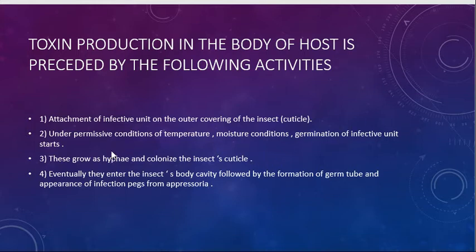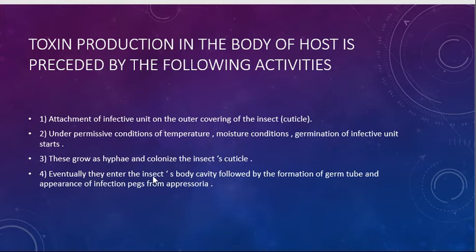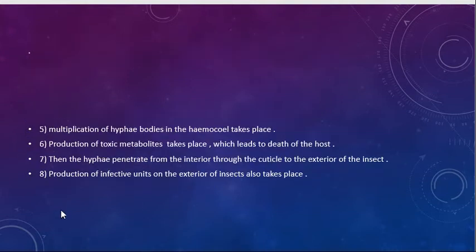They grow as hyphae and colonize the insect's body. The insect's body is colonized by the formation of a germ tube. After entering the body, they produce a germ tube. And as a result, the appearance of certain infectious propagules from appressoria is seen. Then the multiplication of hyphal bodies in the hemocoel takes place.